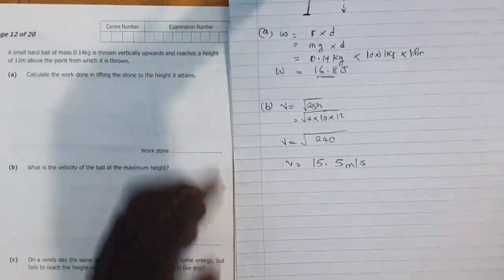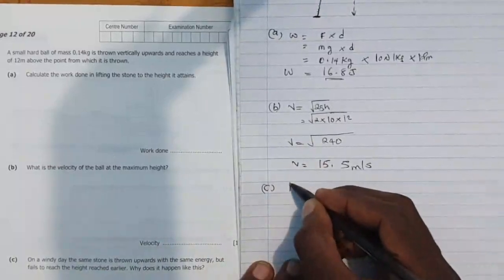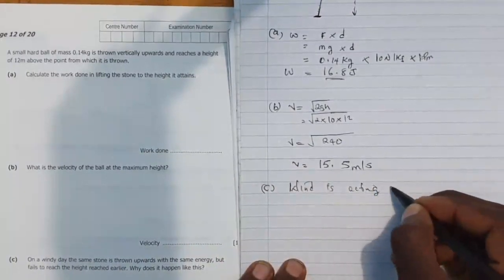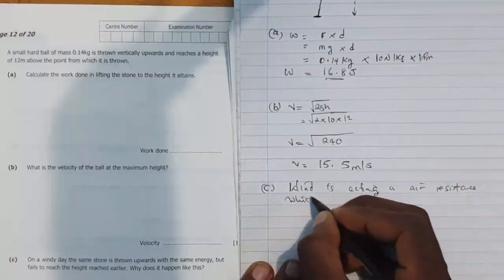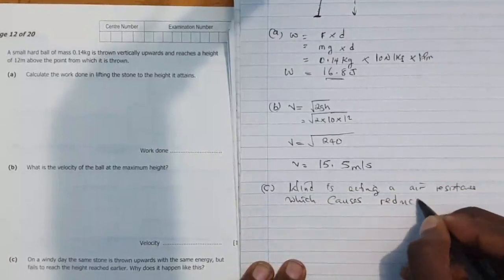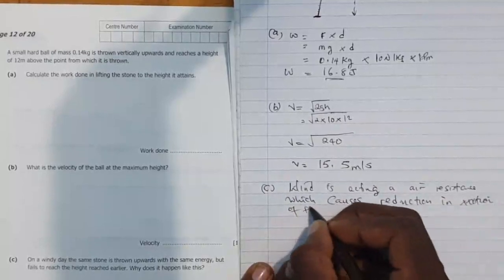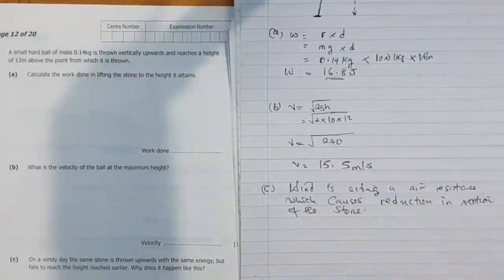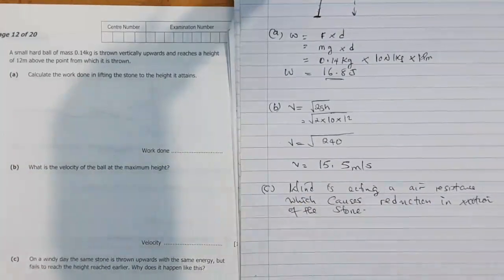The thing is simple: wind in this case is acting as a resistance. So we can say wind is acting as air resistance which causes reduction in motion, causes a reduction in motion of the stone. So the stone won't move the same distance. Why? Because there's air resistance acting against it, so it will eventually not move the same distance.